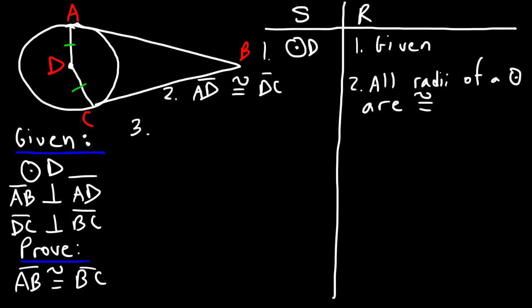Next, we could talk about the other given statement: AB is perpendicular to AD and DC is perpendicular to BC. We could just write 'given' for that step.